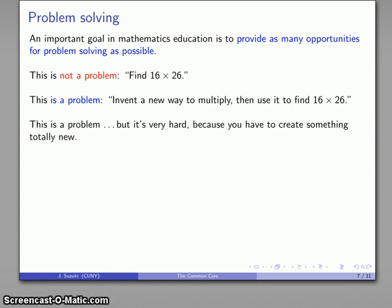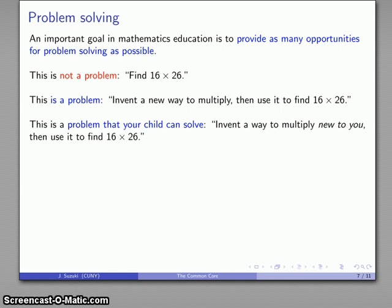But it's actually a very hard problem because we have to create something completely new. And most of us, if we were confronted with this, we would probably not be able to create a completely new way of multiplying because, quite frankly, people have been inventing ways of multiplying for 4,000 years. And all of the ways, all of the obvious ways to multiply have already been invented. Well, here's a problem your child can solve. Invent a way to multiply that is new to you. Then use it to find 16 times 26. Or, equally relevant, here's a problem. 16 times 26, but at this point, you don't know how to multiply. How would you do it?